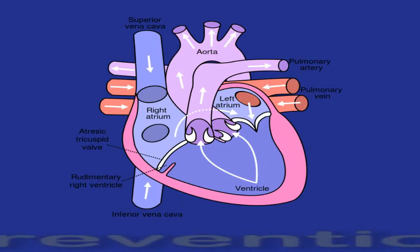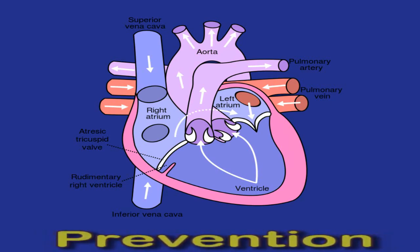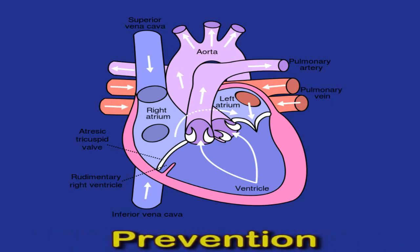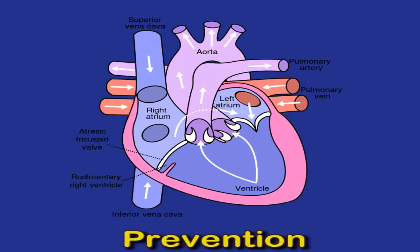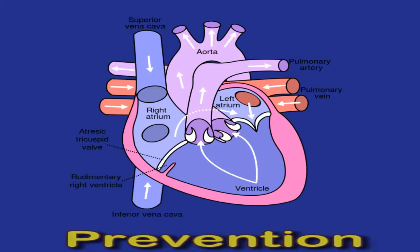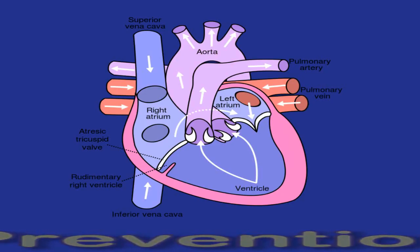Prevention: some lifestyle changes may lower the risk of developing conditions associated with left atrial enlargement. These include managing high blood pressure and high cholesterol, eating a healthful diet rich in fruits and vegetables, reducing or eliminating alcohol, quitting smoking, exercising regularly, losing weight if overweight, and practicing good stress management.